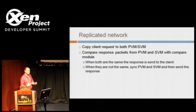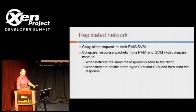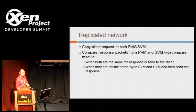In terms of the way that it talks to the client, the clients will send in their request for information or whatever they're getting from the server. The Colo system will take that request and replicate it out to the two VMs that are handling the work. The VMs will pass it into the application. The application will respond with its response packets. Those packets are then compared between the two systems, and when they're the same, the response is sent back to the client. When they're different, we sync the primary and secondary VMs so that they're back in alignment, and then the response is given to the client.